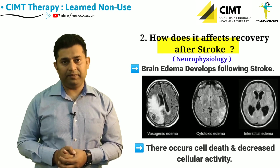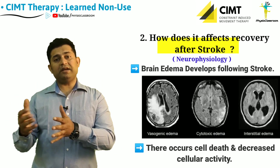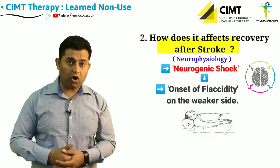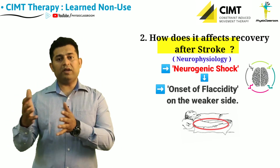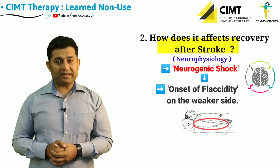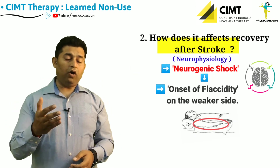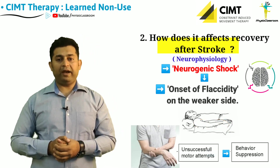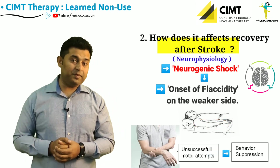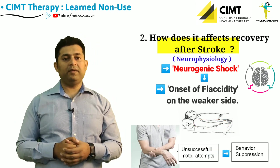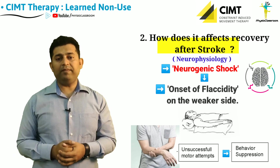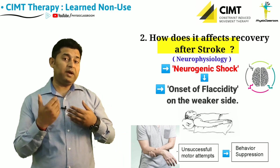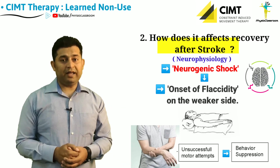As a result of this reduced cellular activity, there is neurogenic shock and onset of flaccidity on the weaker side. During this period, any attempt made by the patient results in failure, and therefore the patient thinks he cannot successfully move the weaker side.